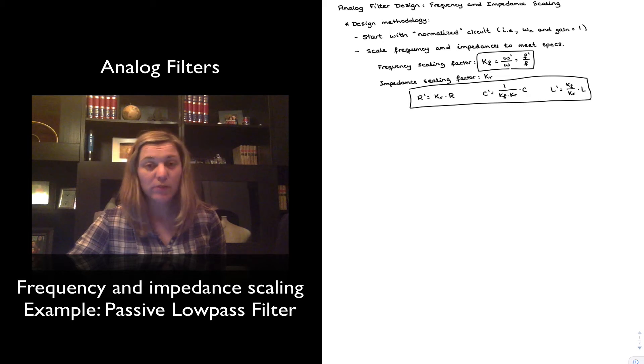The new capacitor values, C prime, are going to be equal to 1 over Kf times Kr times C, the capacitor value in the normalized circuit. And the same thing for inductors. The new value of inductances, L prime, are going to be equal to Kr over Kf times the value of the inductor in the original normalized circuit.